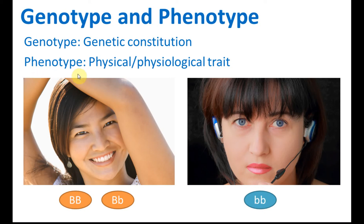And then phenotype is what's shown in the physical or physiological trait. For example, brown eye is something that is shown in the physical body, and this is called a phenotype. Brown eye is a phenotype, blue eye is a phenotype. And their genetic constitution is called a genotype. So this is the difference between genotype and phenotype.